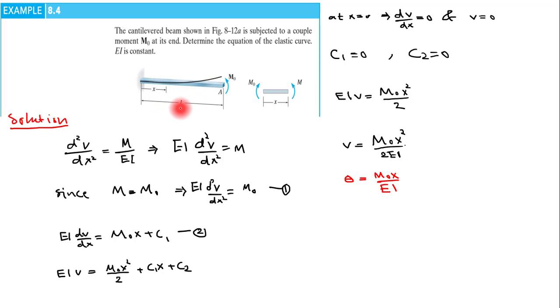The maximum slope and deflection occurs at x equals L, that is at point A. Then theta_A equals M0 L divided by EI, and v_A equals M0 L² divided by 2EI.